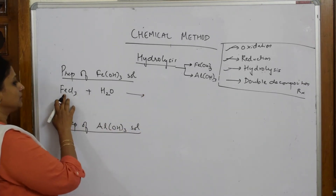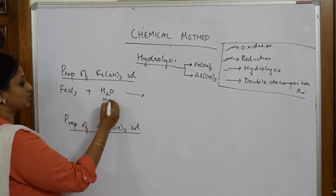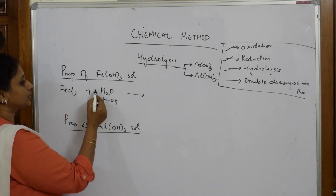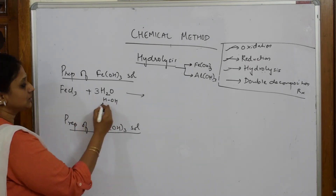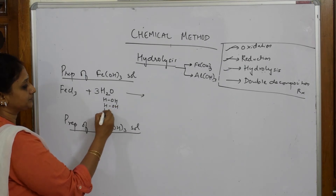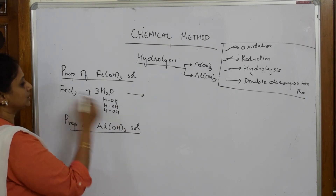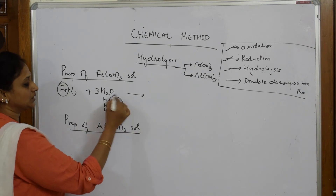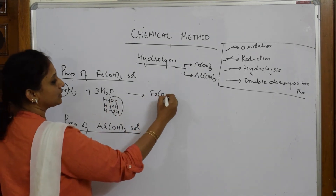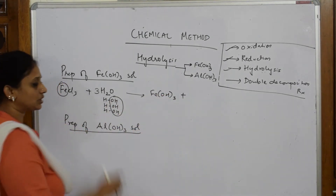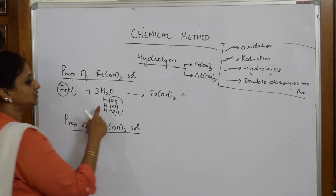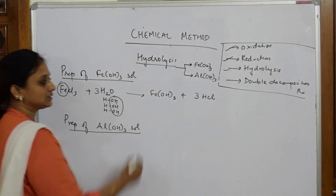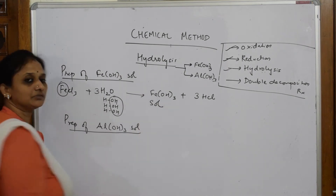Now, if I have to write water I can write it like this. Suppose if I take 3 moles of this, what do you get? Fe plus 3 OH — so you get Fe(OH)3. What are you left with? You are left with 3 chlorines and 3 hydrogens, which gives 3HCl. So this is the salt which you prepare.